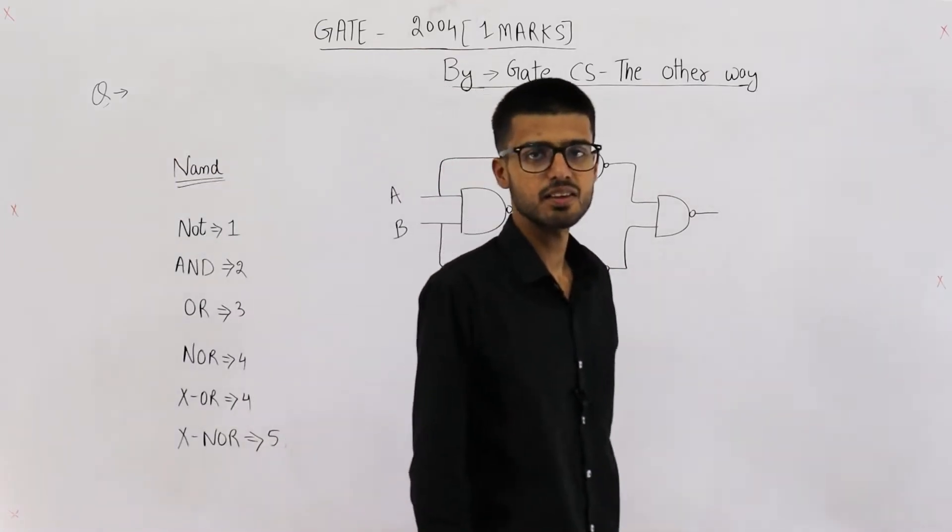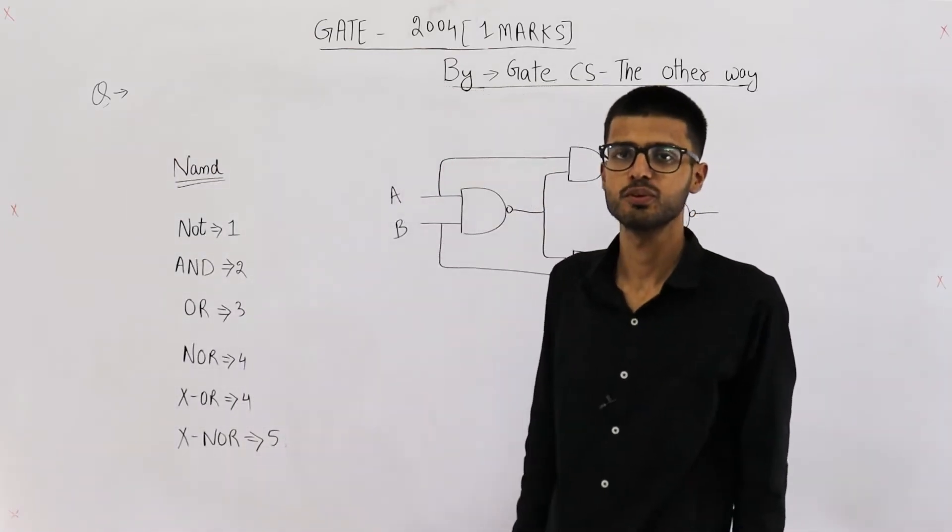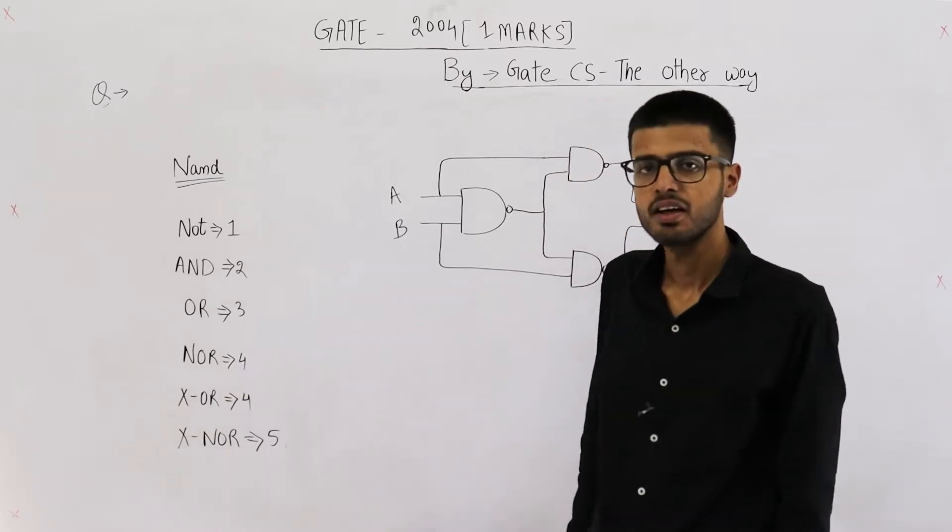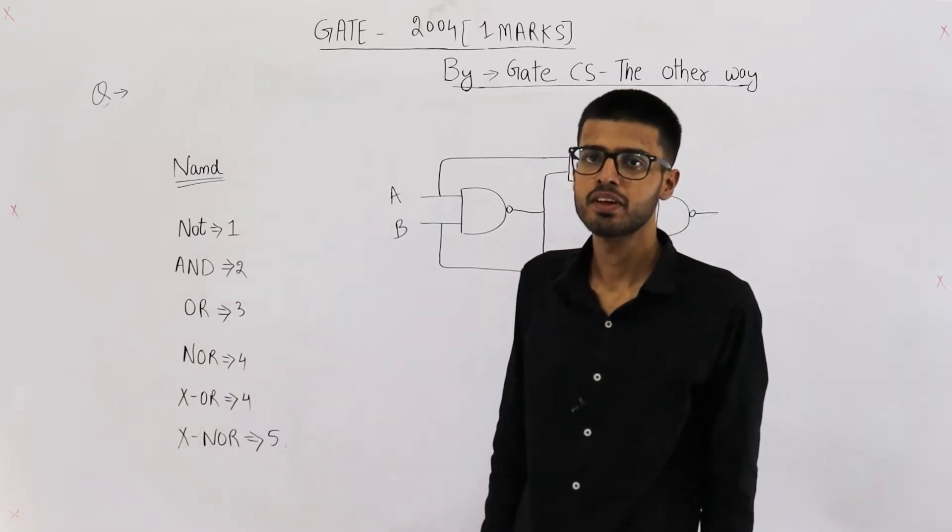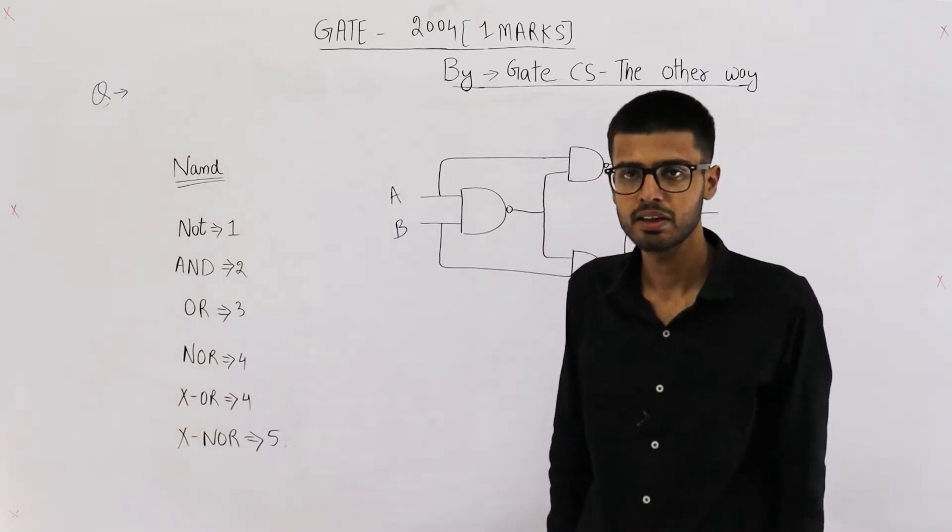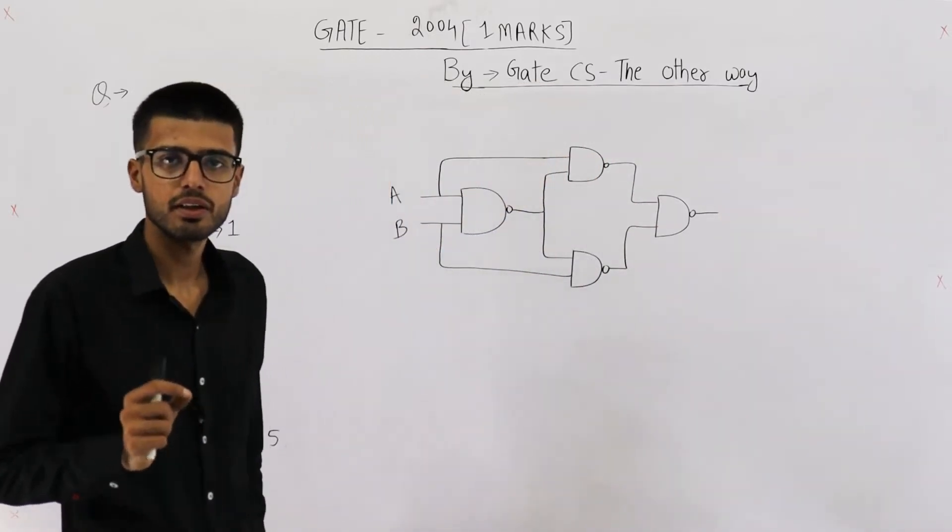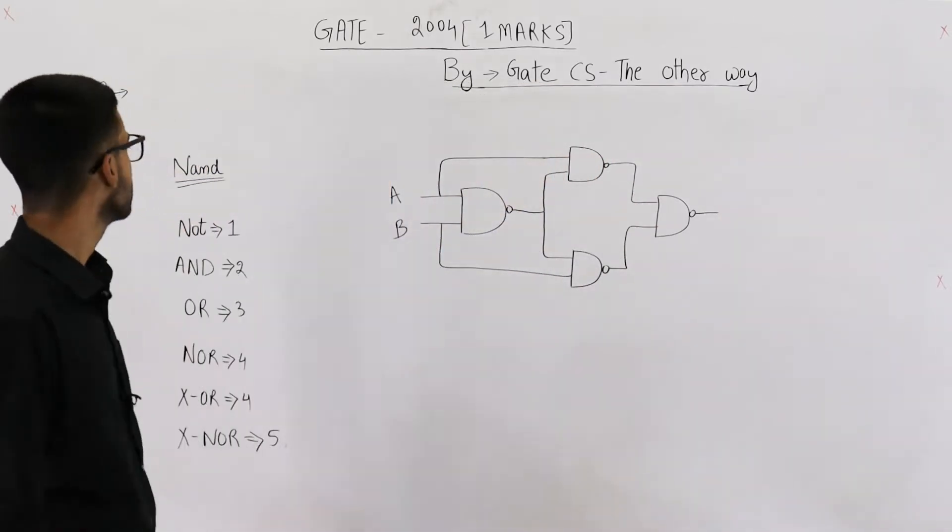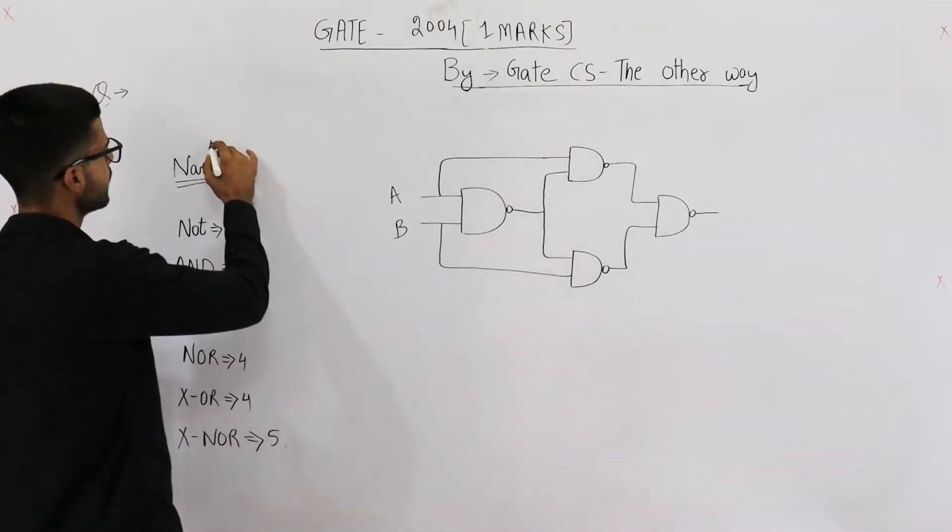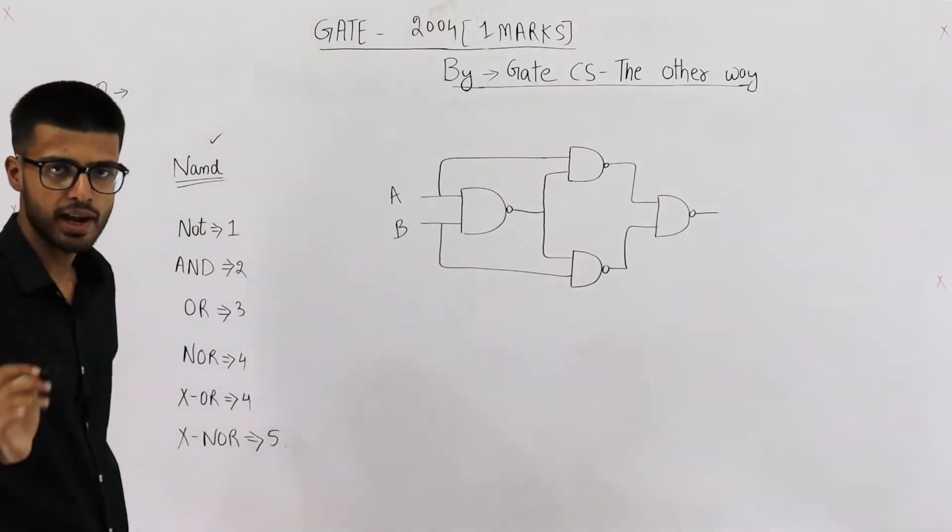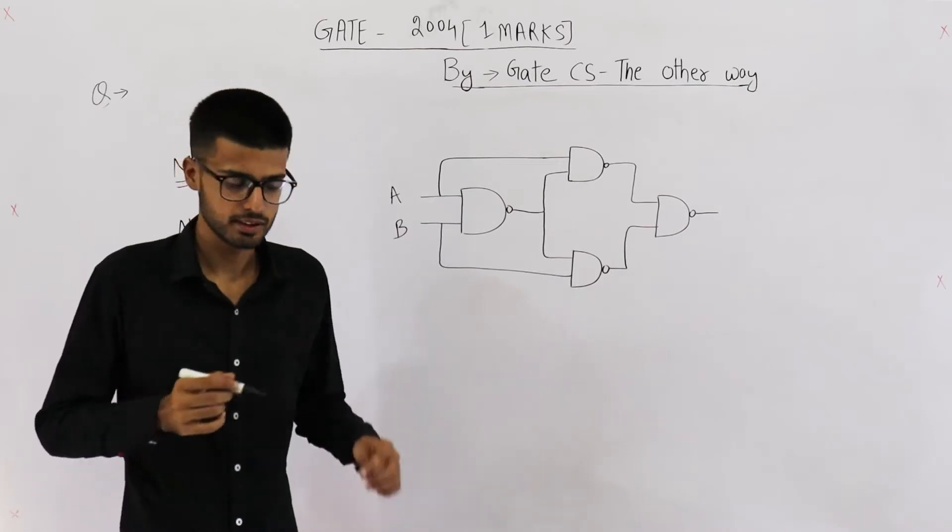Hello students, welcome back. This is a question from GATE 2010 exam. They are asking what is the minimum number of NAND gates required to implement a XOR gate. So you need to derive a XOR gate using NAND gates only. Now you very well know NAND gate is a universal gate. NAND and NOR both are universal gates and they can implement each and every logic function.